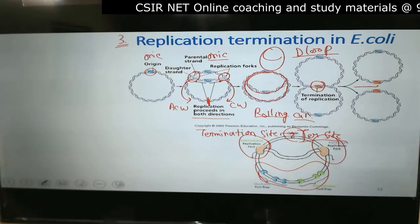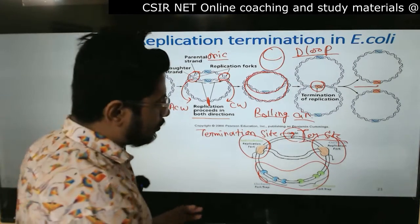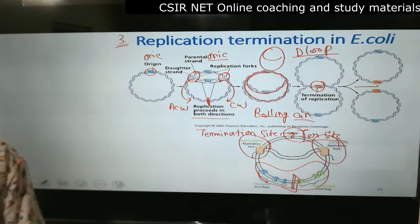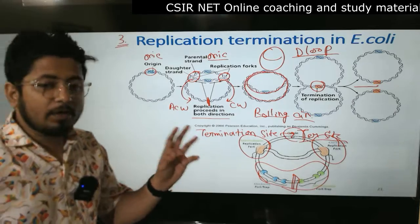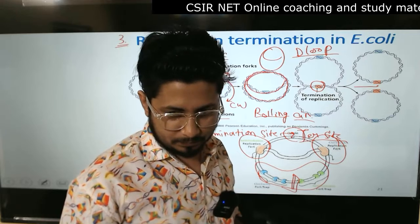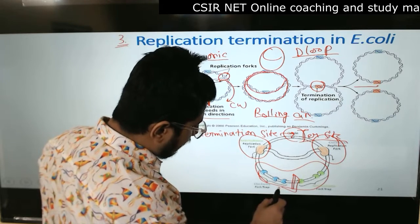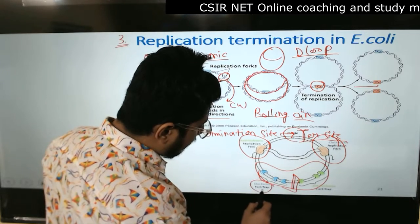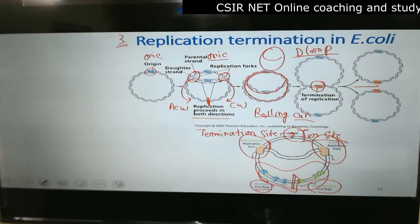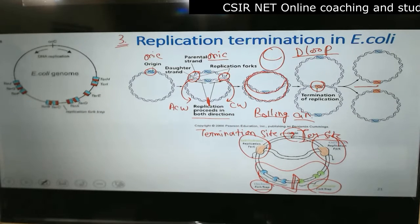This is origin, these are the termination - this is the whole termination site. Two replication forks move in the clockwise and counterclockwise direction, and the overall idea is to trap these forks in the termination site. Trapping the fork - trapping of fork means will not allow the fork to move further.